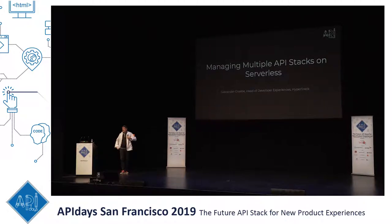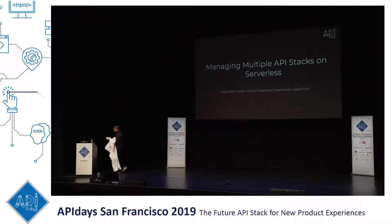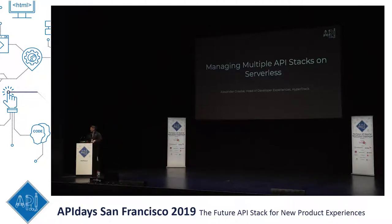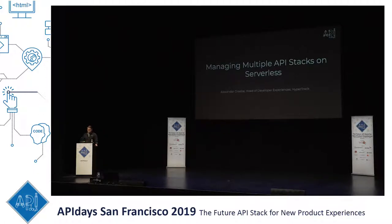Just a bit about myself, very quickly. I graduated with a computer science degree, worked as a software engineer for multiple companies. Later on, moved on to advocate for open source at SAP, and then I led developer relations at Uber, after which I founded a company as a CTO. Failed horribly after a year, but it was an interesting experience — so I earned my badge. And then I joined HyperTrack just a couple of months ago.